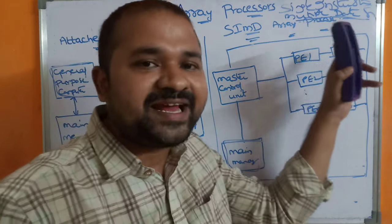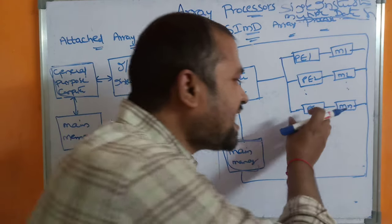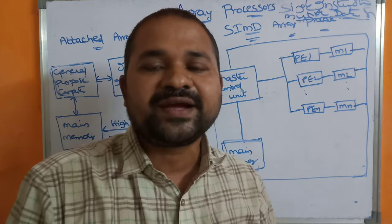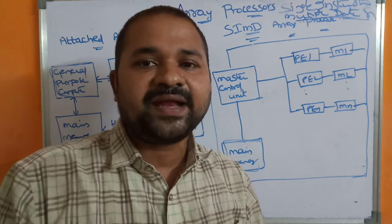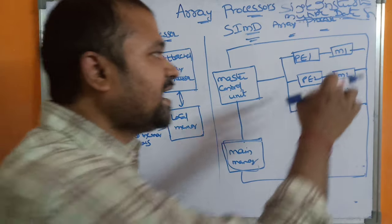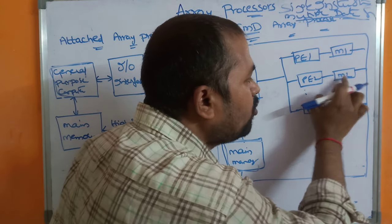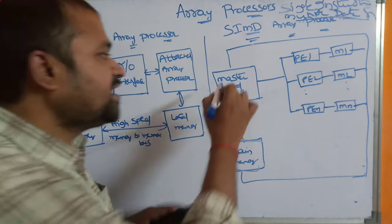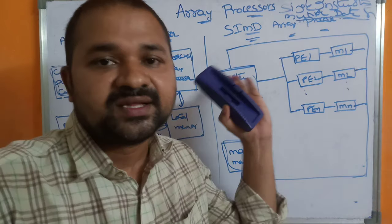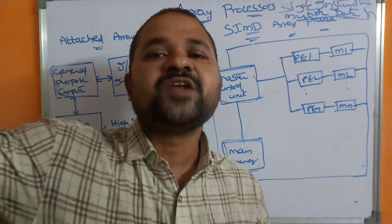PE1 means processor element 1, PE2 means the second processor element, and PEn means the last processor element. Each processor element contains an ALU (arithmetic logic unit), some pipelines such as arithmetic pipeline and multiplier pipeline, and some registers. All those components are available in each processing element. M1 is the local memory associated with PE1, M2 is the local memory associated with PE2, and so on. We also have a master control unit that controls all the processing units.